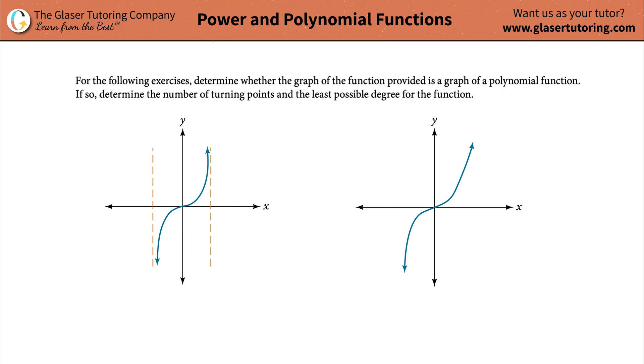For the following exercises, determine whether the graph of the function provided is a graph of a polynomial function, and if so, determine the number of turning points and the least possible degree for the function. All right, so are these polynomials? That's what we have to answer. So in order to be a polynomial function, we have to meet two criteria.